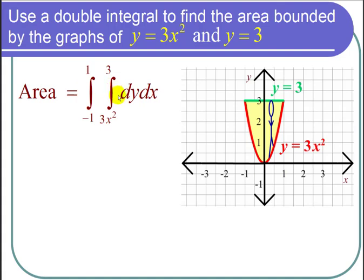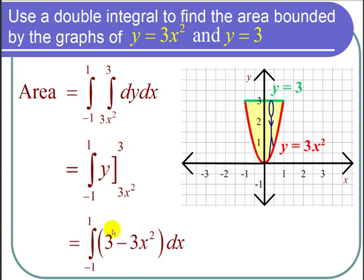So now I integrate. The integral of 1 dy is y and I'm going from 3x squared to 3. So I plug in. I plug in 3 in for y. I plug in 3x squared in for y and I get 3 minus 3x squared.